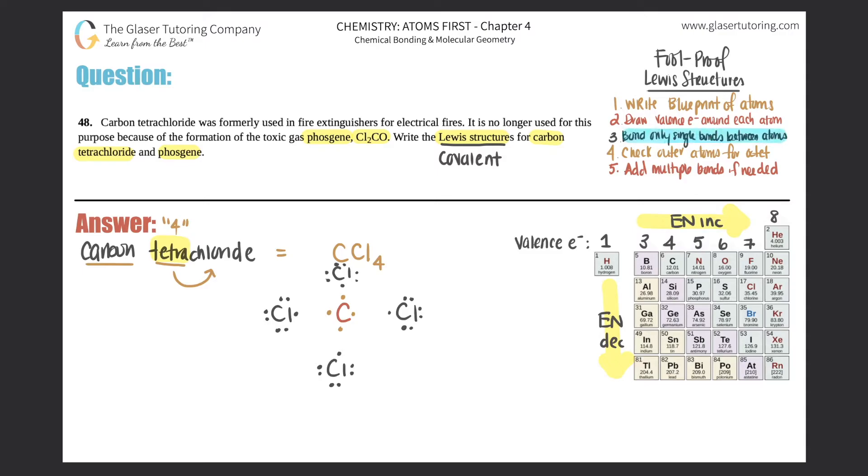Now we bond only single bonds between the atoms. And that comes from one electron from one atom, and then the other electron from the other. So for here, here's one electron. It will bind with this one. And then I'll make a single bond down here. I'll make a single bond over here and electron to electron. There's my single bond.